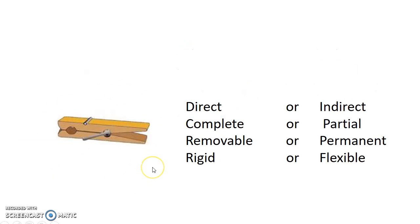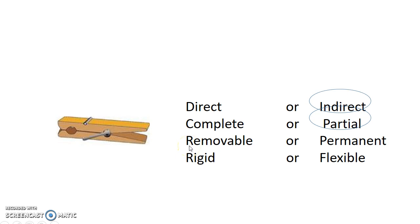Let's analyze the clothespin. Do the two parts require something else? Yes — there's a little metal piece, so it is indirect. Is movement possible between the two parts? Yes, it moves up and down, so it is partial. Can the object be taken apart without causing damage? Yes, you can remove the metal piece without damaging the wooden pieces, so it is removable. Can the linking component be deformed and return to its initial position? Yes, so it is flexible.